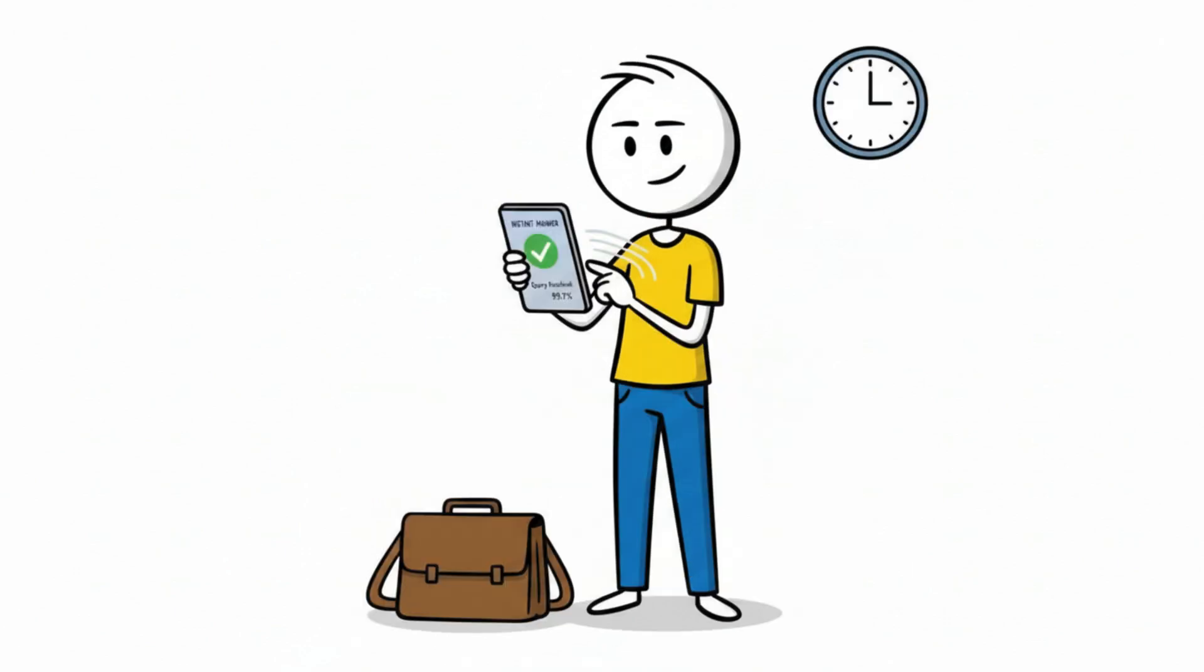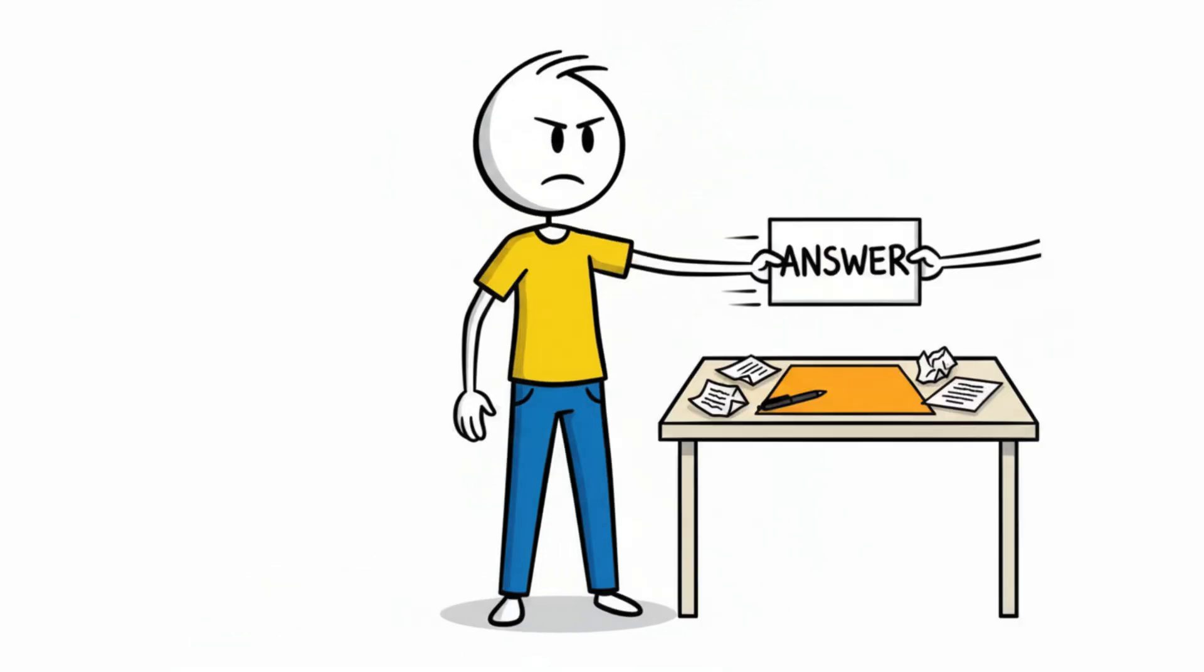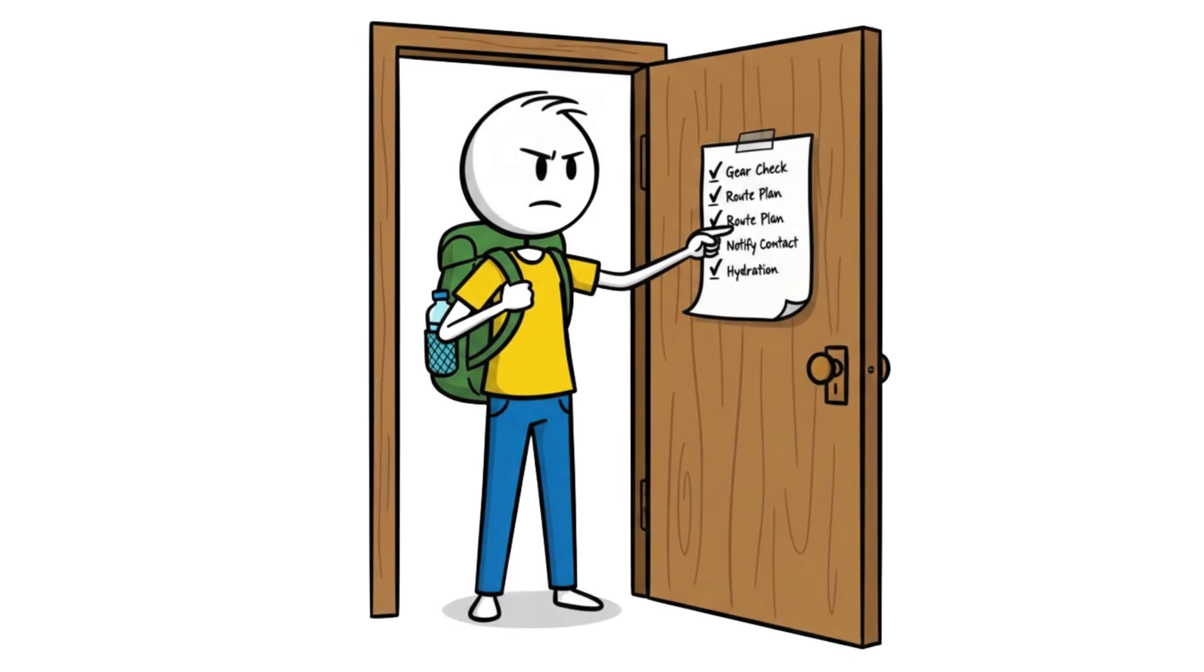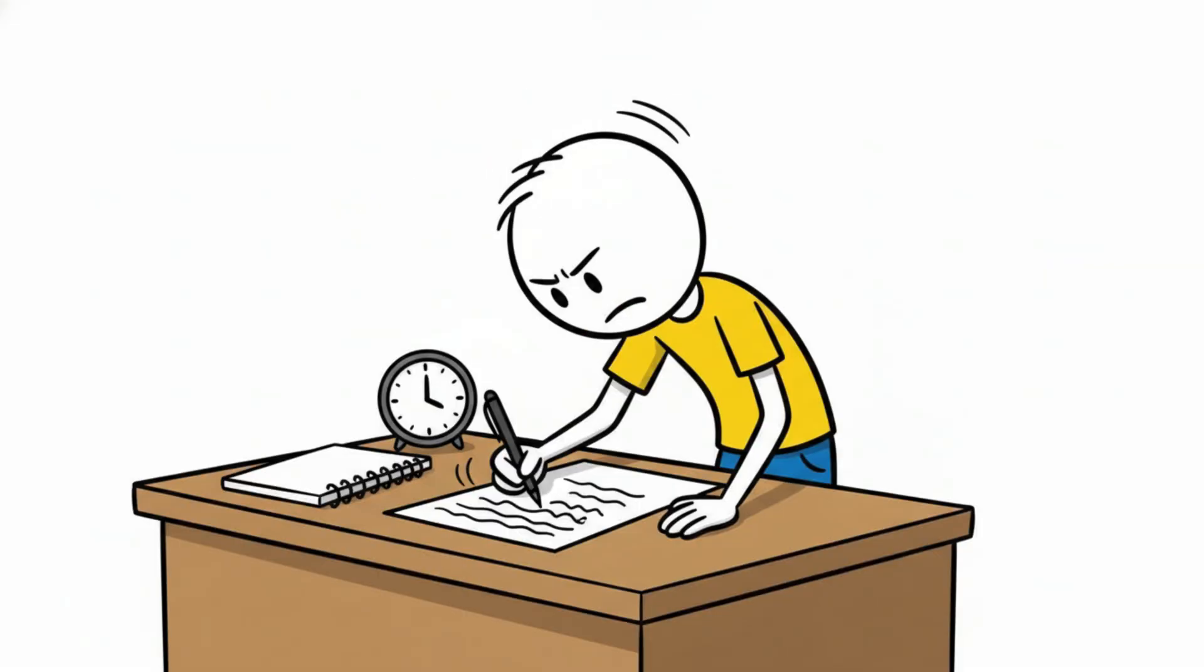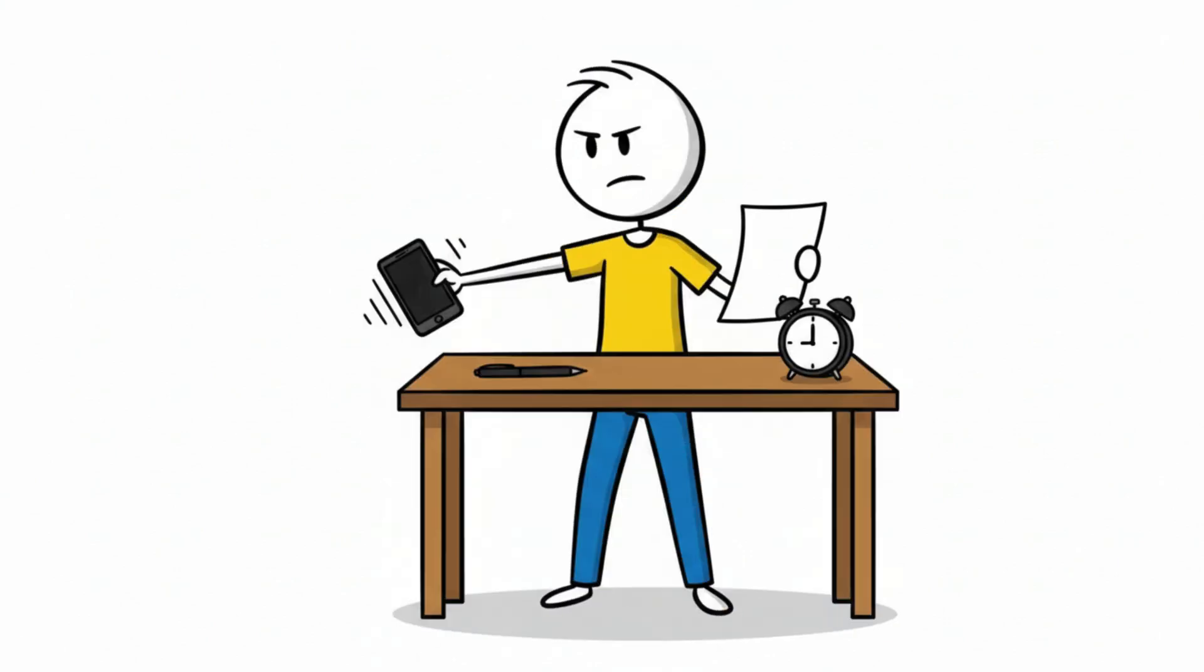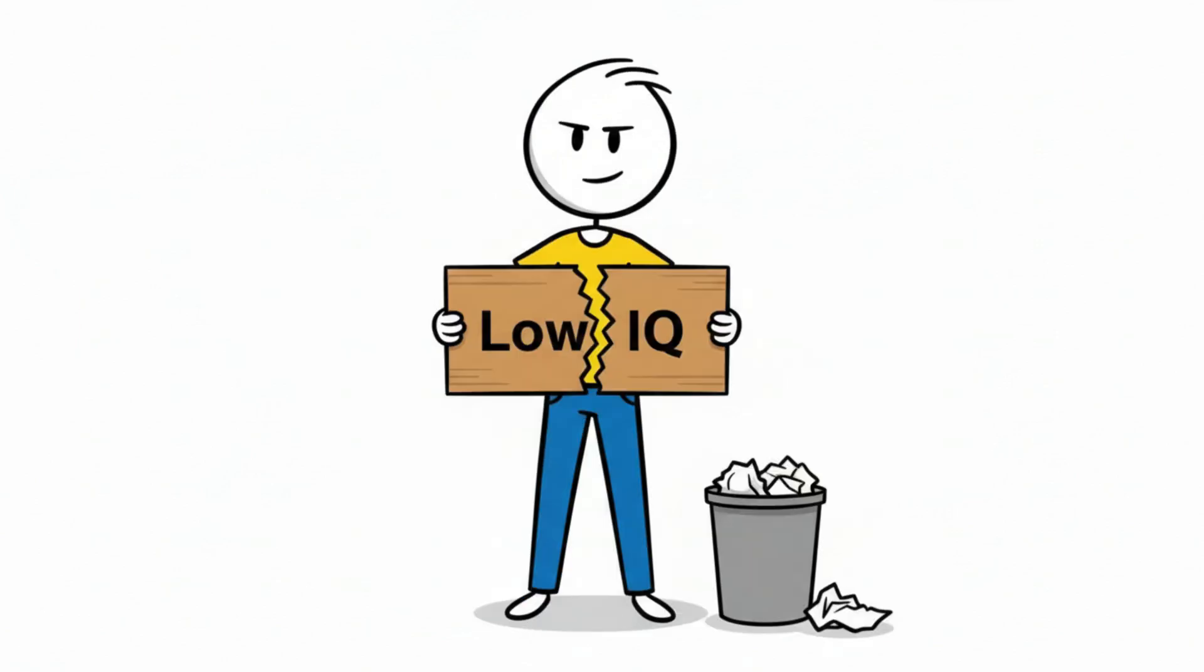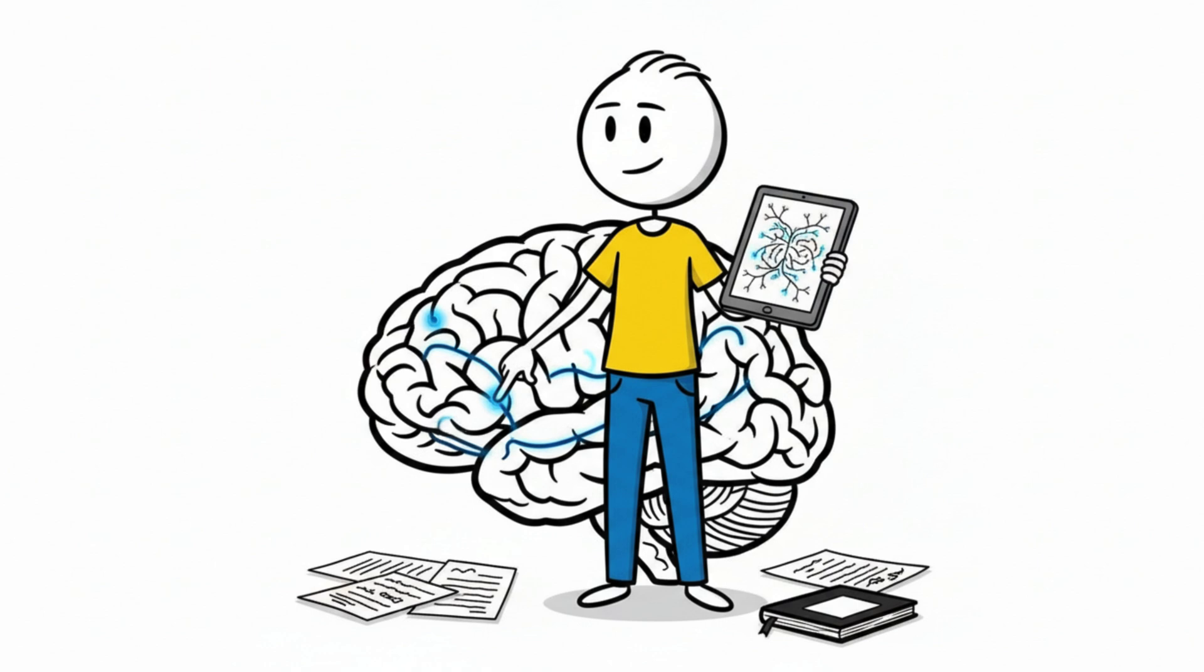This is why instant solutions feel productive but disappear from memory. You borrowed an answer. You didn't build one. So here's the habit. Before you ask for help, write your best answer. Even if it's wrong, especially if it's wrong. Because the point is not being correct immediately. The point is forcing your brain to attempt construction. Struggle is not evidence of low intelligence. It's the mechanism that builds it.